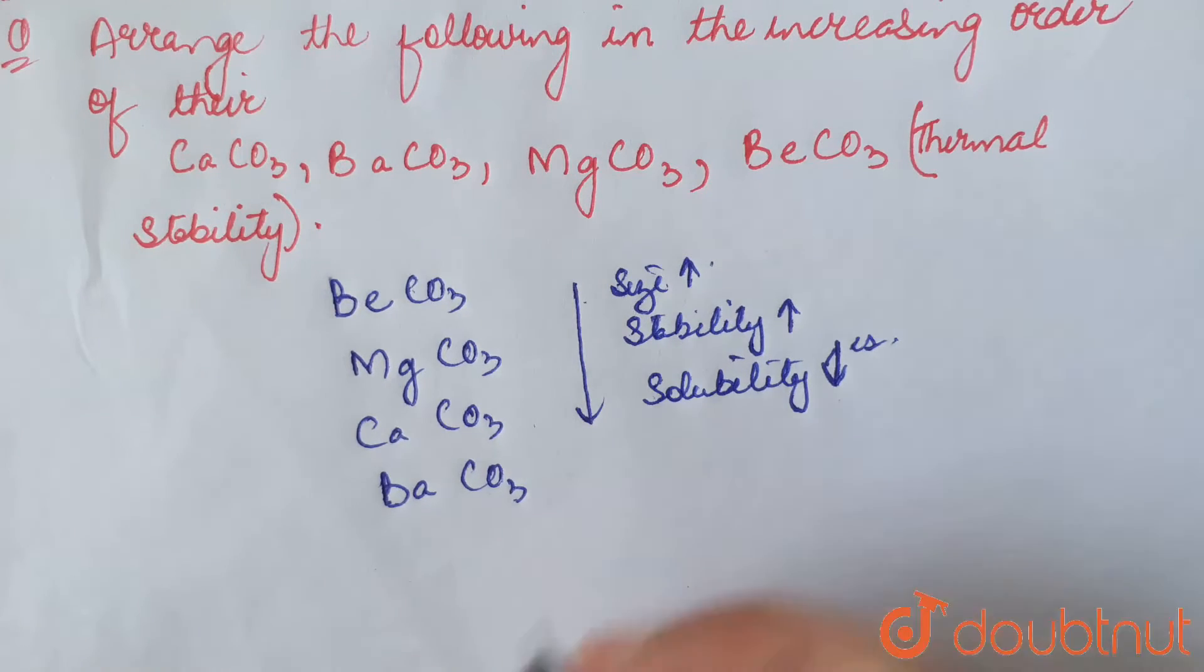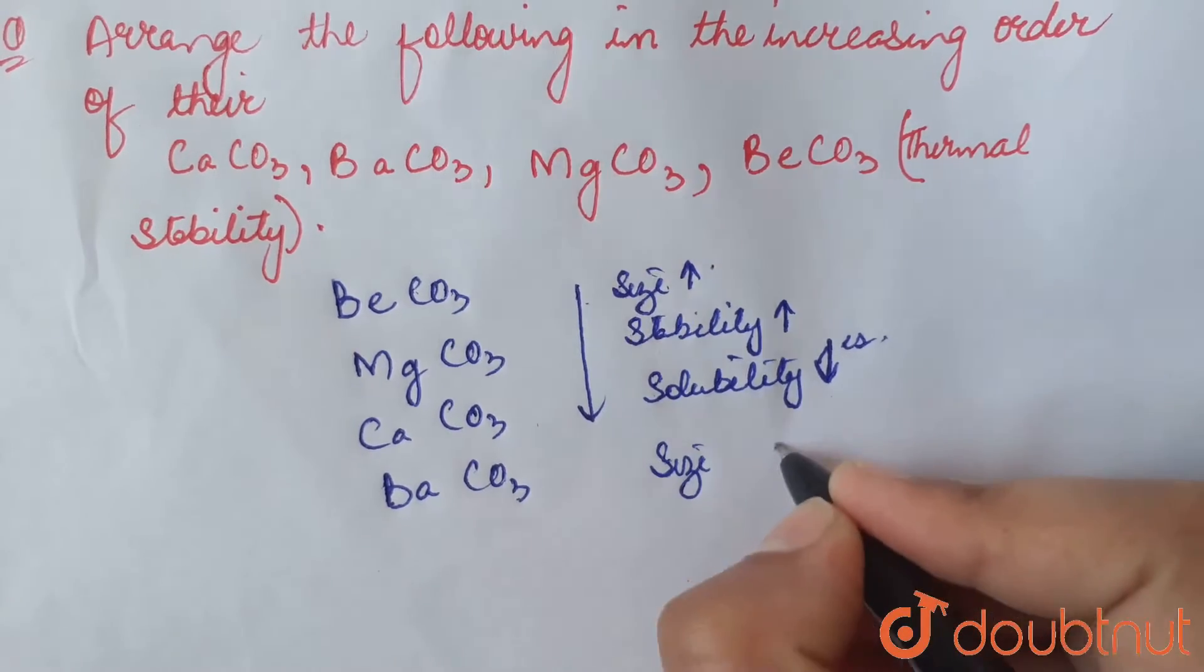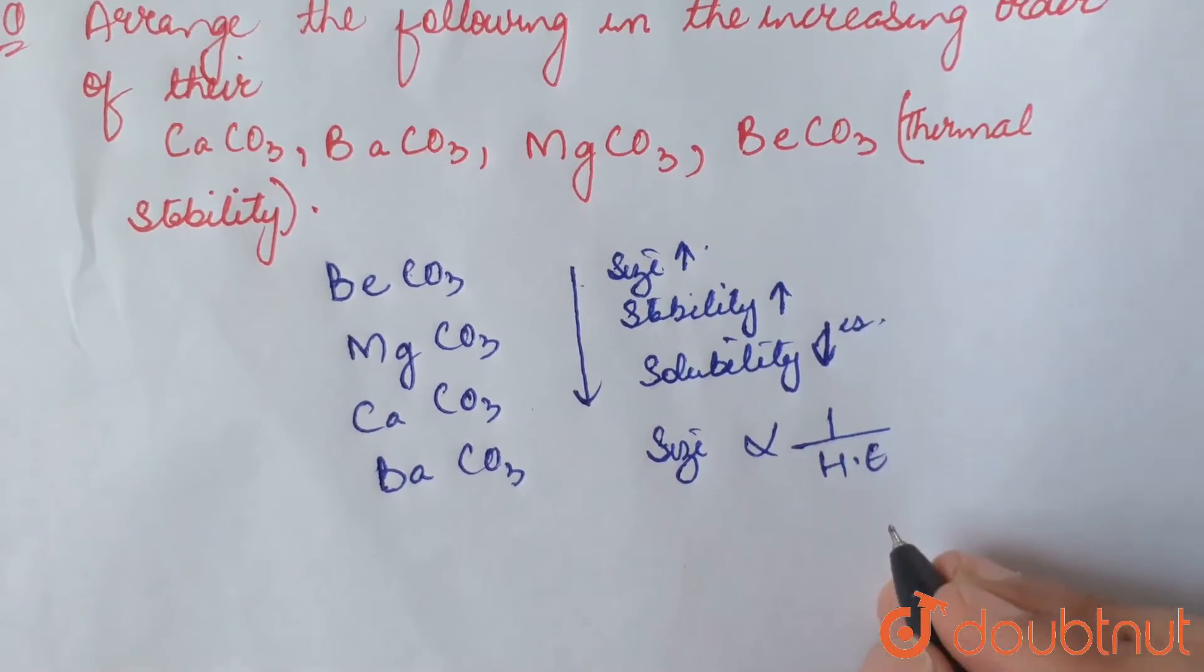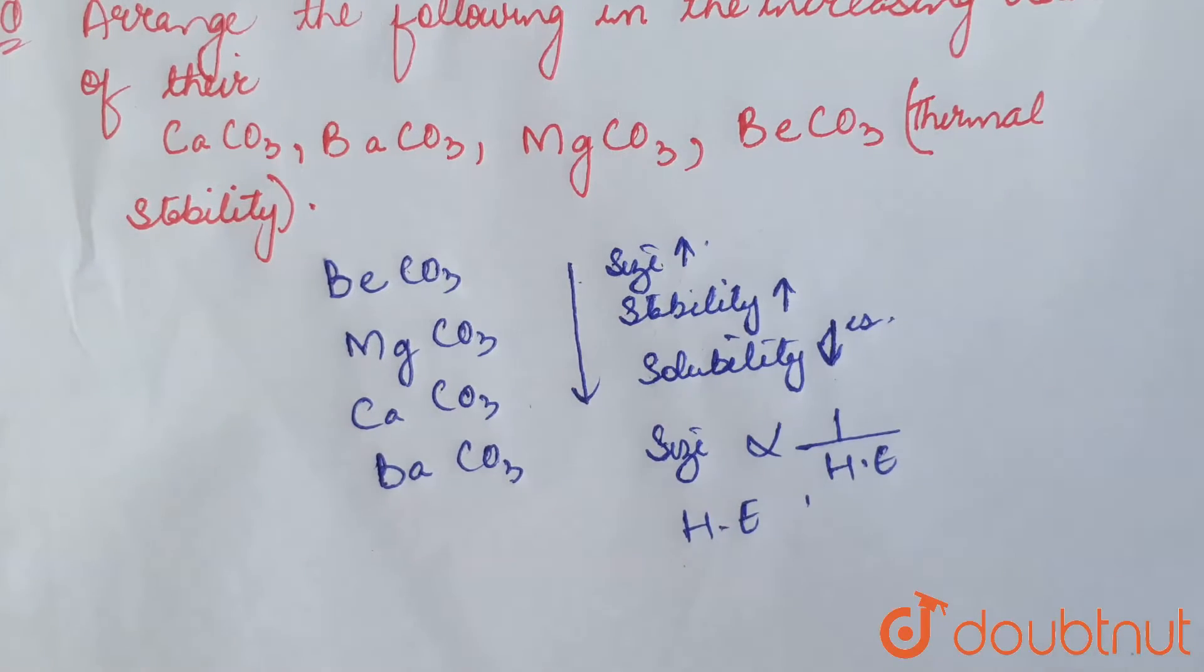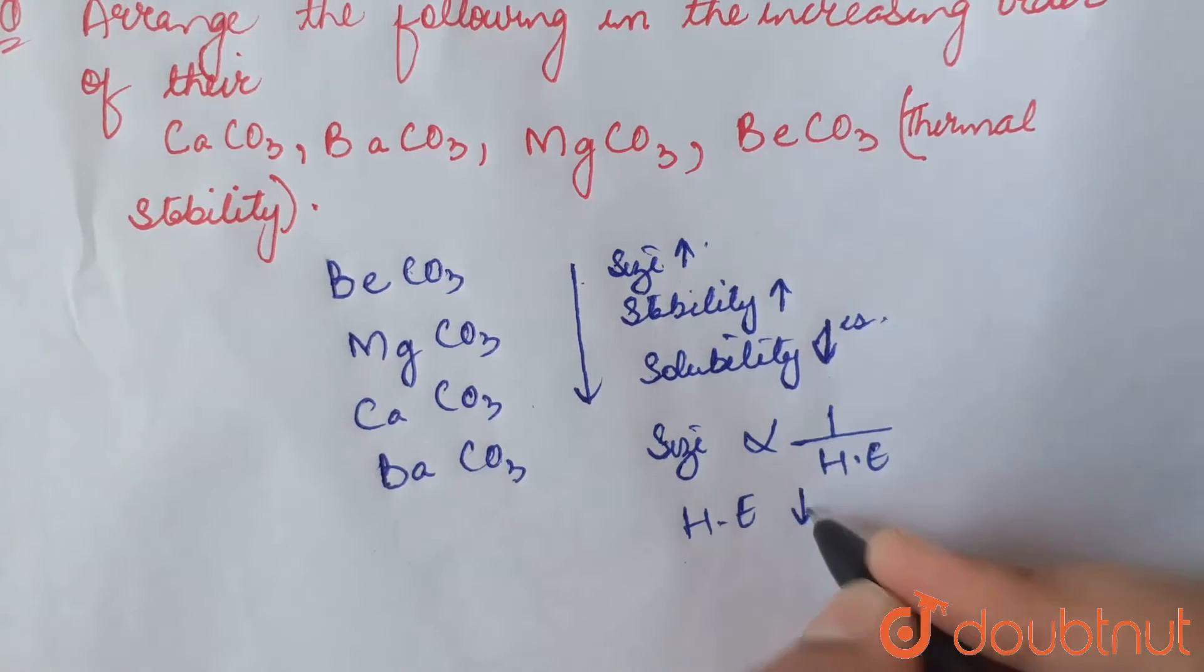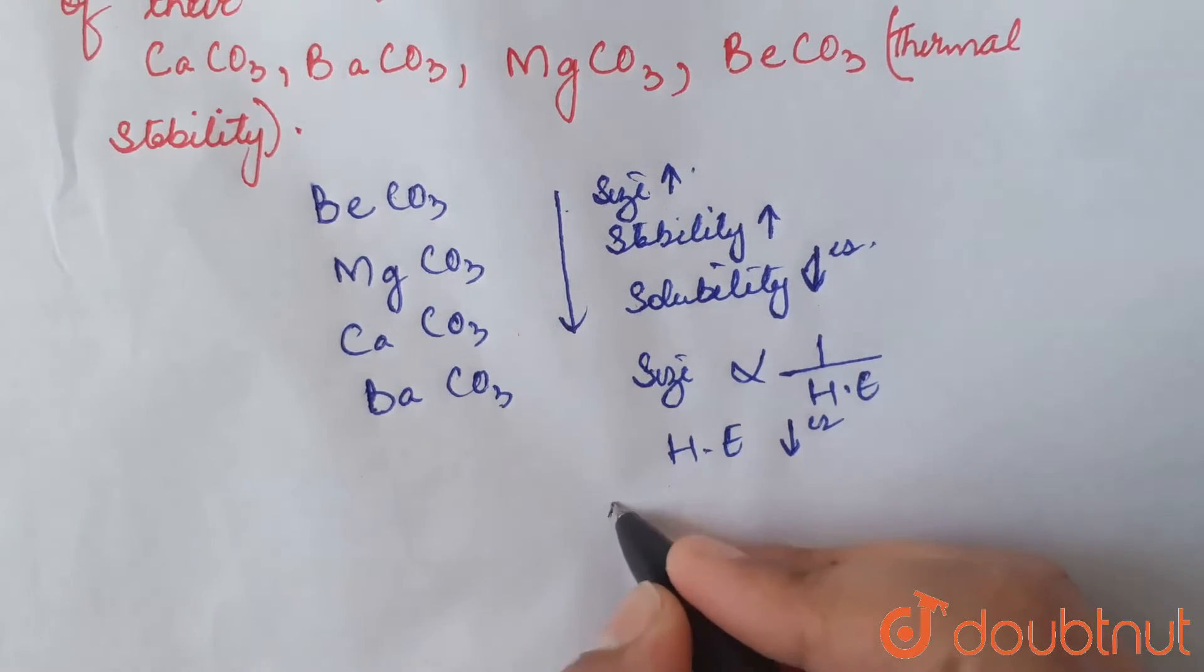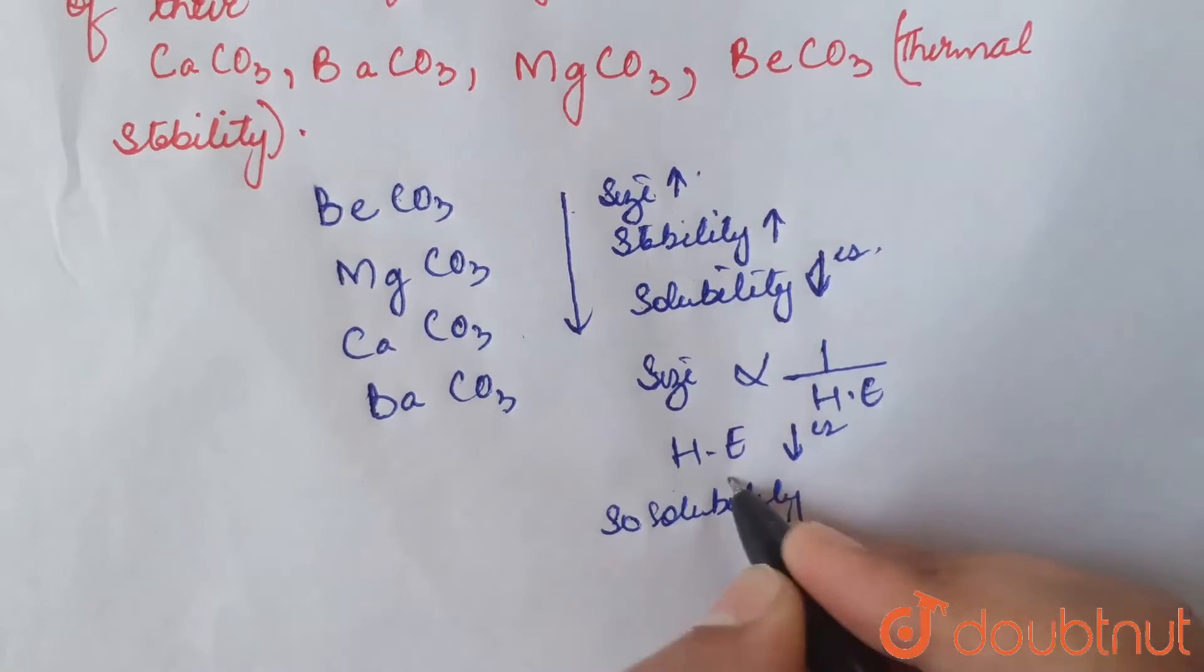This is also because as we go down the group, size increases, which is inversely proportional to the hydration energy. Thus, down the group, hydration energy decreases, which results in decrease in solubility. So solubility also decreases down the group.